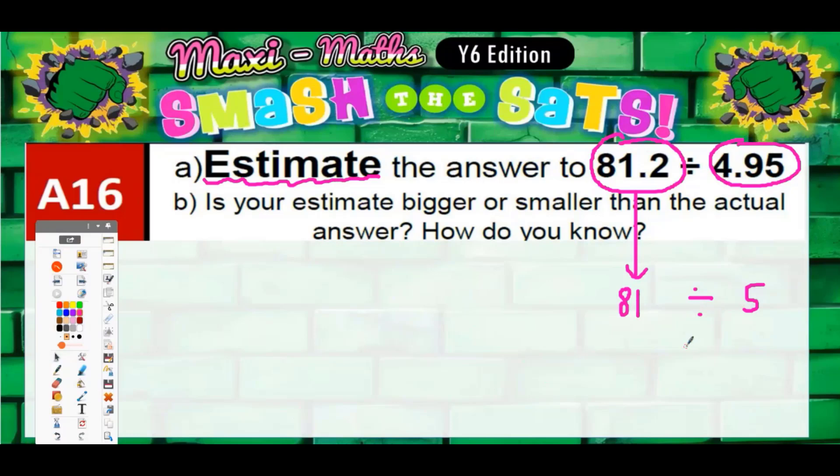That's going to be a bit trickier because 81 is not going to be exactly the five times table, so we would end up with a remainder. We could do that, but it'd be perfectly okay just to round it to the nearest 10 instead of the nearest whole number.